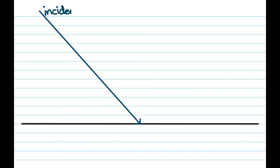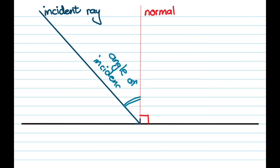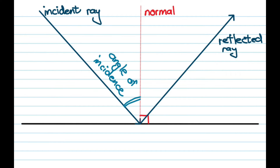When we talk about reflection, we have a plane or reflective surface — like the line we have here — and we have a light ray coming in, which we call the incident ray. Once you have the incident ray, you draw the normal, which is an imaginary line perpendicular (90 degrees) to the reflective surface. The angle between the incident ray and the normal is called the angle of incidence. Then we have the reflected ray going out, which also makes an angle with the normal called the angle of reflection.